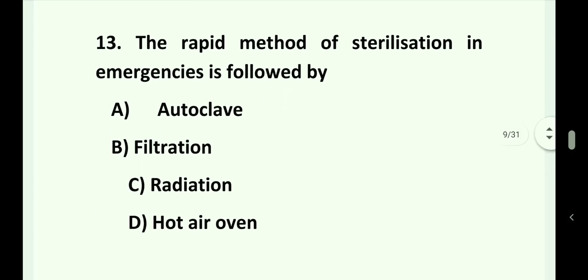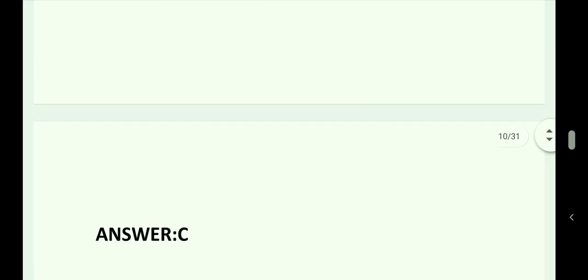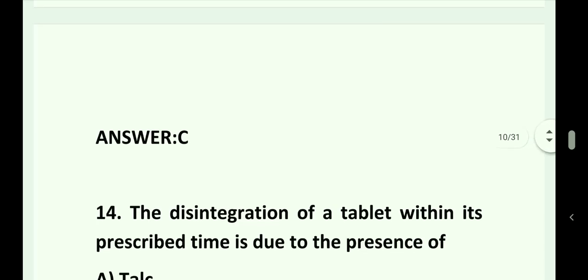Question number 13. The rapid method of sterilization in emergencies is: Option A. Autoclave. Option B. Filtration. Option C. Radiation. Option D. Hot Air Oven. Answer is Option C. That is radiation.